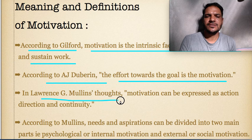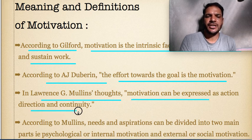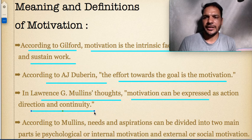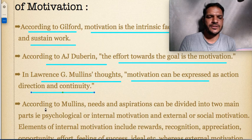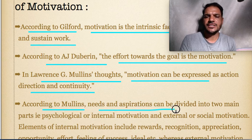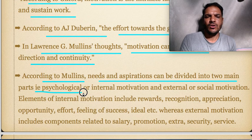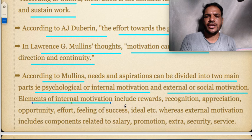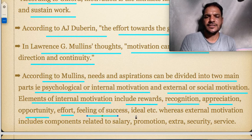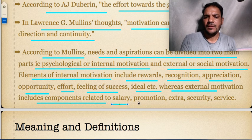According to Lorenz G. Mullins, motivation can be expressed as action, direction, and continuity. Mullins divides needs and aspirations into two main parts: psychological or internal motivation, and external or social motivation. Internal motivation includes rewards, recognition, appreciation, opportunity, effort, feeling of success, idols, etc. External or social motivation includes components related to salary, promotion, extra bonus, security, and other service facilities.